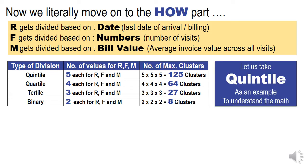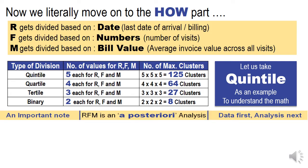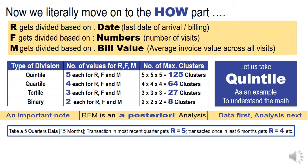Let us take the quintile as an example to understand this mathematics. An important note is that RFM is an a posteriori analysis technique — the data is already there and the analysis follows the data. Assuming five quarters, or 15 months, of data: people who have transacted in the last three months at least once — that is, in the most recent quarter — get the highest R score of 5. People who transacted once in the last six months get an R score of 4, and so on.